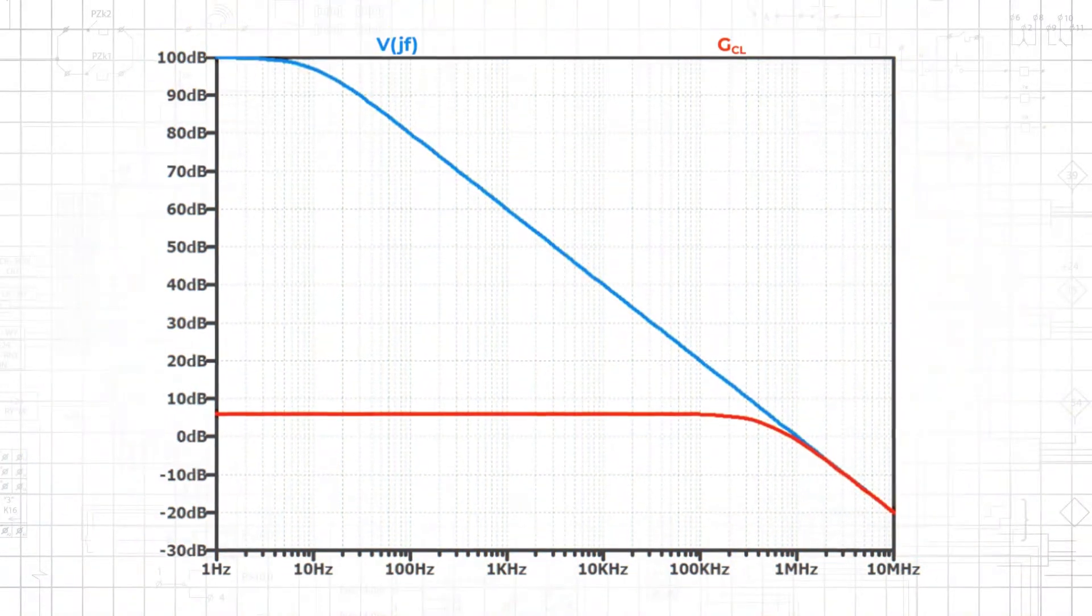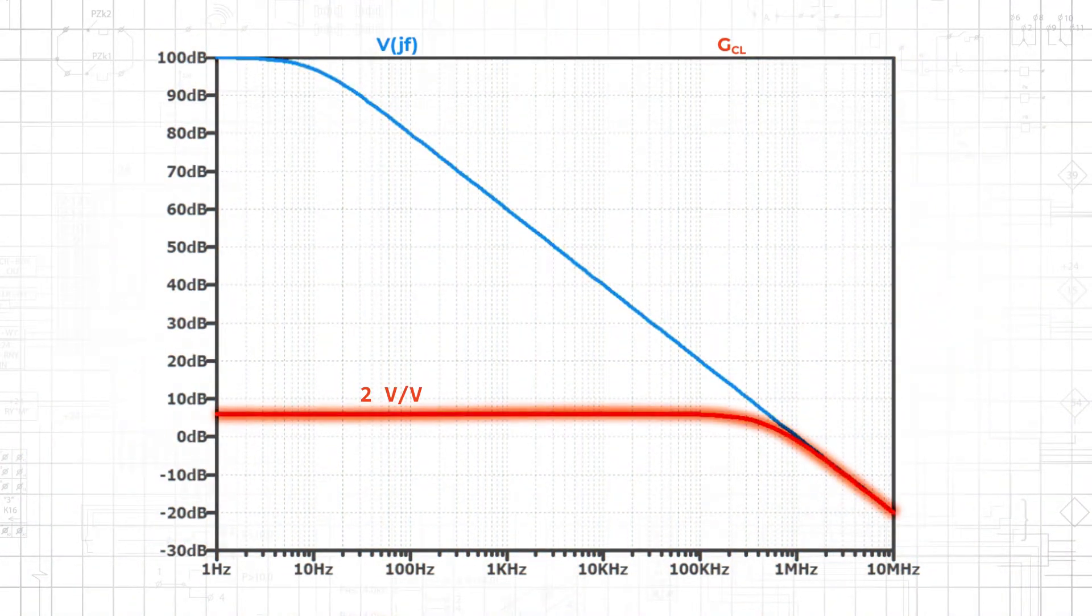For example, if we implement a non-inverting amplifier with a gain of 2 volts per volt, the corner frequency of the closed-loop gain will be much higher than the corner frequency of the open-loop gain.